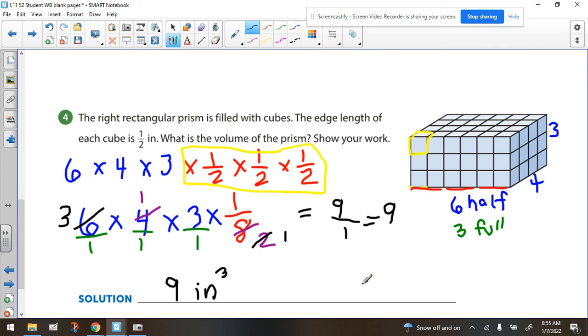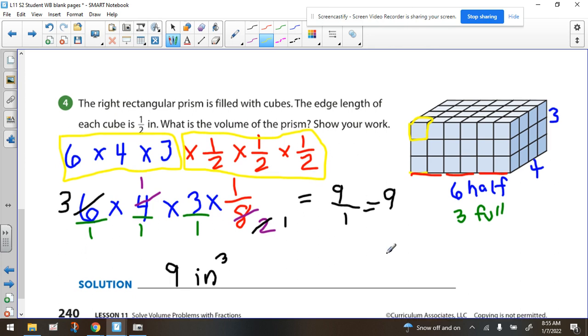All right. Now, again, if they wanted to know how many half-inch cubes we need to fill up this container, then you would just be multiplying these numbers together, and that would be your answer. But they want to know the volume of the prism in cubic units, which makes this a little bit more complex.